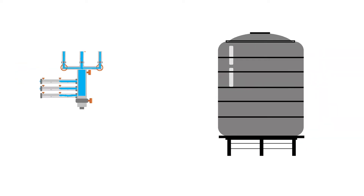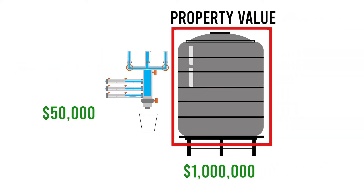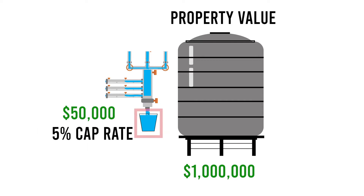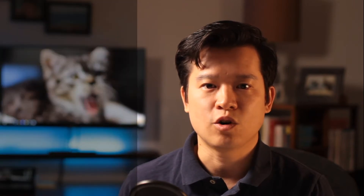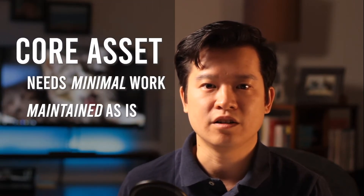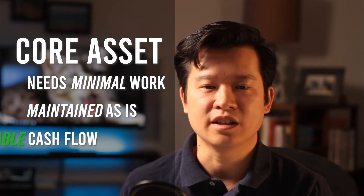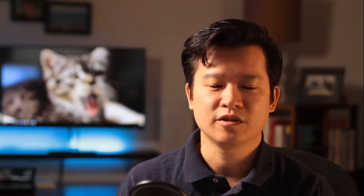So let's say you bought a property for one million dollars and it generated fifty thousand in NOI, or a five cap. You could be perfectly happy with that and just keep operating it as is. In industry lingo, this is called a core asset — one that needs minimal work and can be held and maintained as is to generate stable and predictable cash flow.